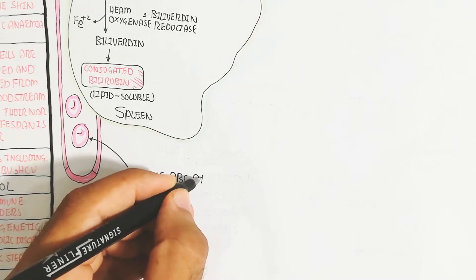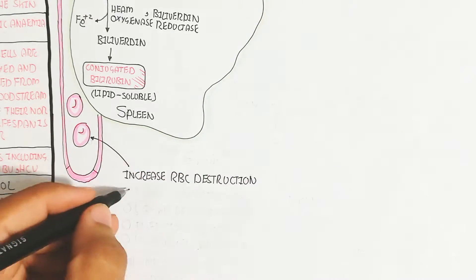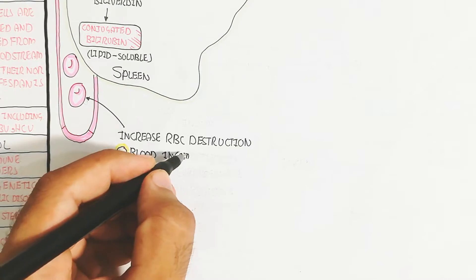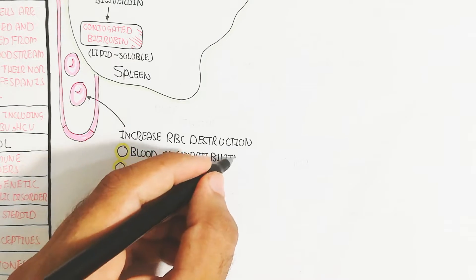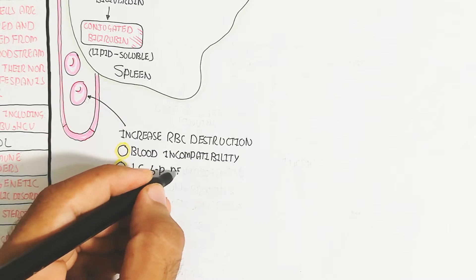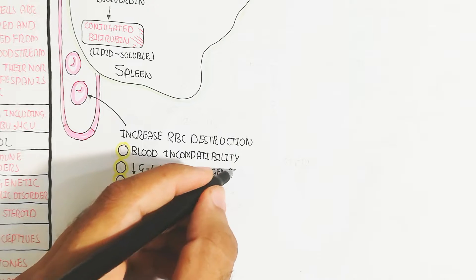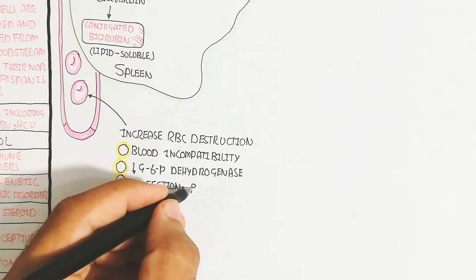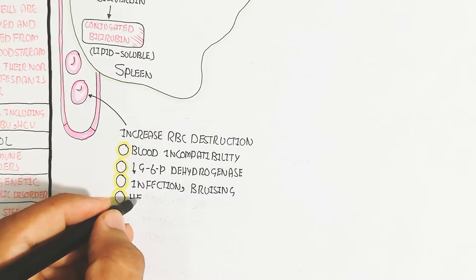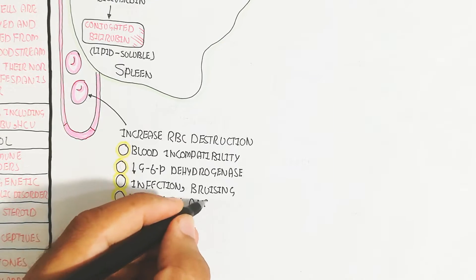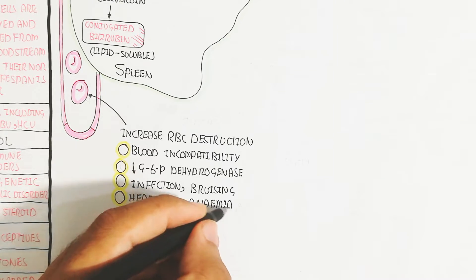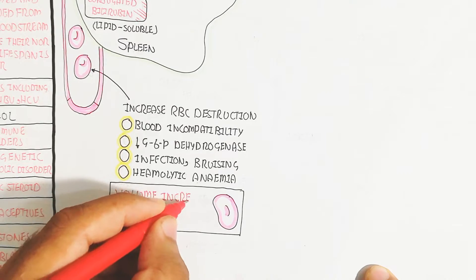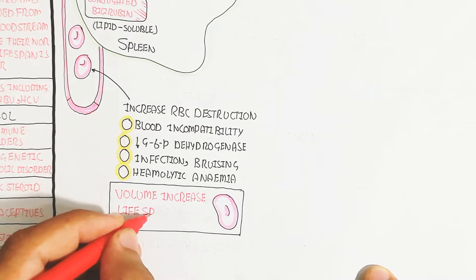Increased RBC destruction leads to increased unconjugated bilirubin. This can occur due to blood incompatibility between donor and recipient, glucose-6-phosphate dehydrogenase enzyme deficiency, infection, bruising, hemolytic anemia, increased RBC volume, and decreased RBC lifespan.